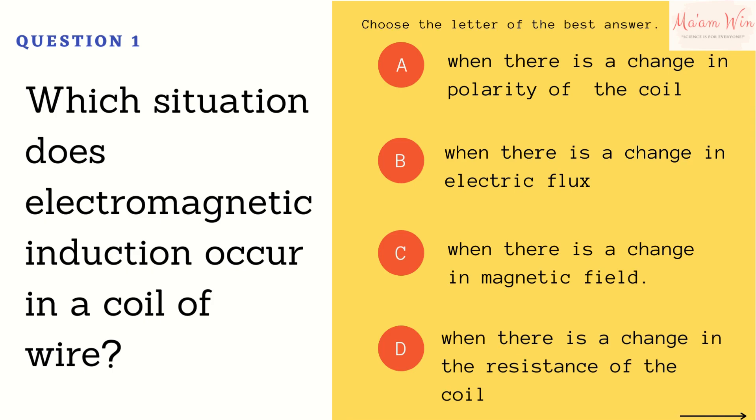Question number one: which situation does electromagnetic induction occur in a coil of wire? Letter A, when there is a change in polarity of the coil. Letter B, when there is a change in electric flux. Letter C, when there is a change in magnetic field. Letter D, when there is a change in the resistance of the coil. Choose the letter of the best answer.